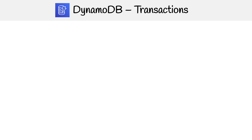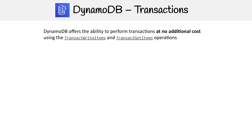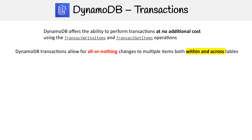Now let's look at how DynamoDB transactions work in more detail. DynamoDB offers the ability to perform transactions at no additional cost using two functions: transact write items and transact get items. These allow you to group together a bunch of write actions or get actions respectively.